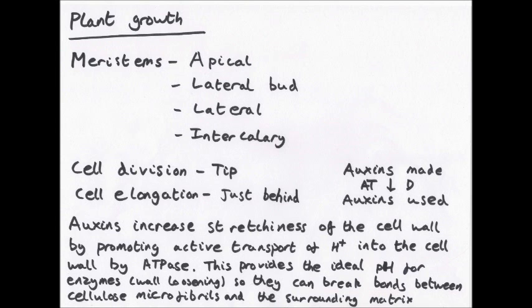Only meristematic tissues can divide, and there are four types you need to know about: apical meristems, lateral bud meristems, lateral meristems, and intercalary meristems.